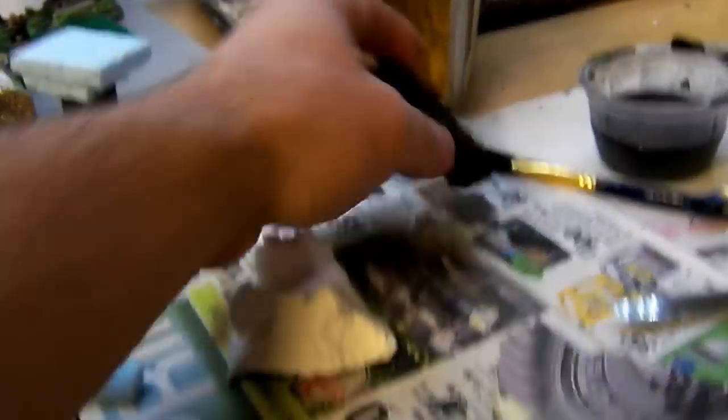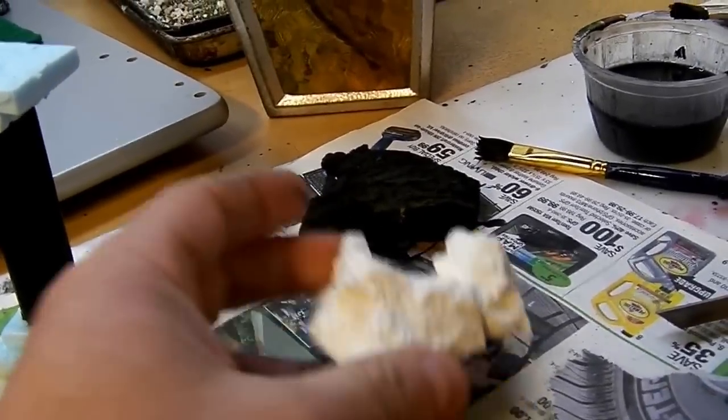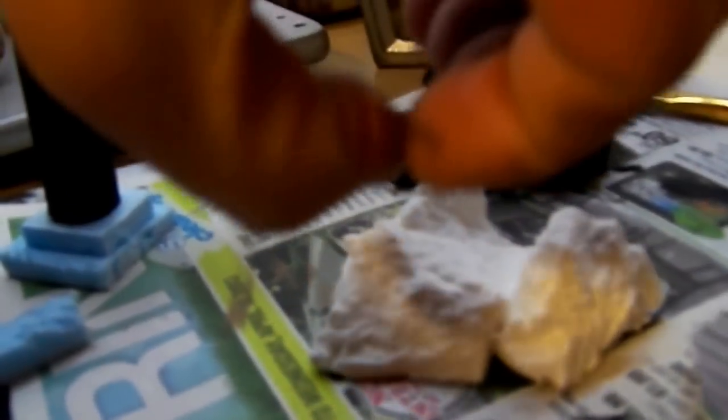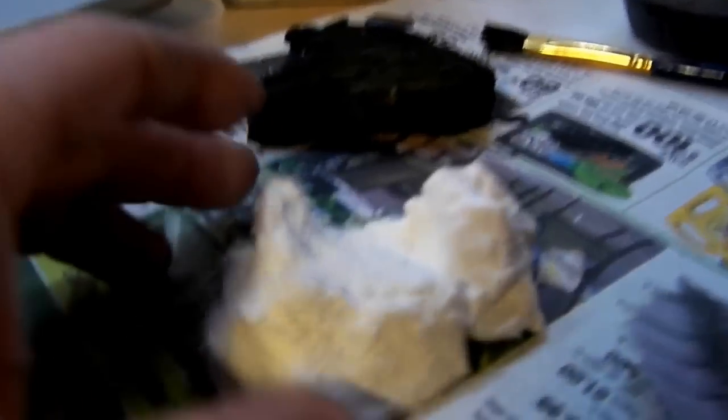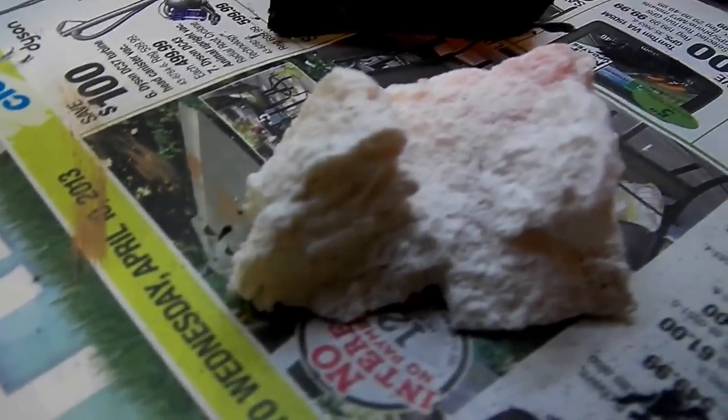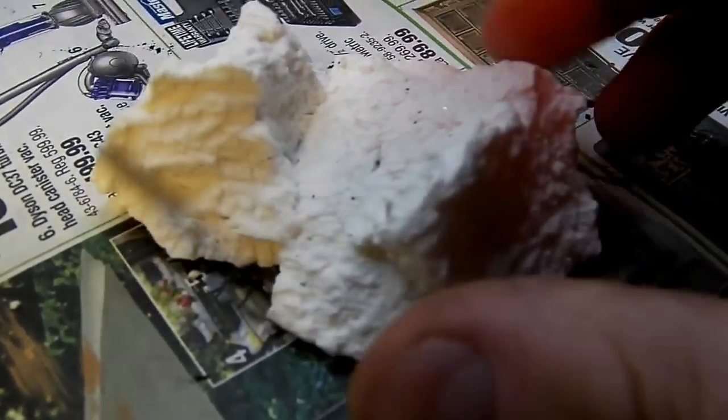I also had this Crayola Model Magic and it had partly dried up and was a bit old. So all I did is just pulled on the layers and separated it, and the texture is very nice for making rocks. I painted this one black but I still need to dry brush it, but it makes some excellent texture for rocks.